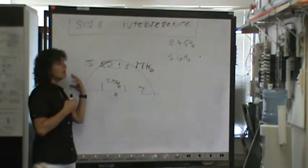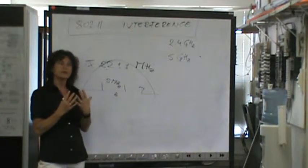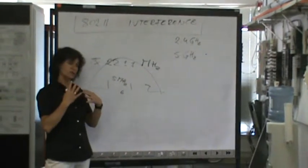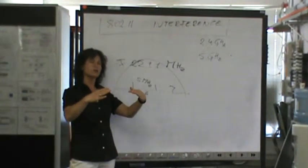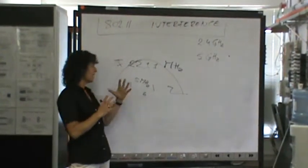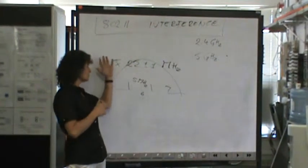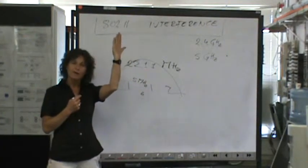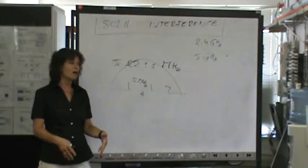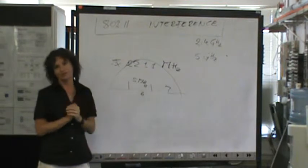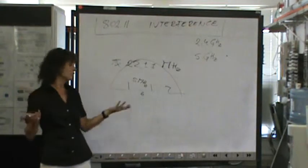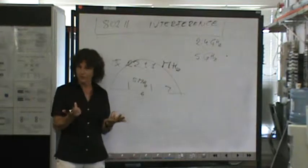So this adjacent channel interference is really bad and that doesn't mean that necessarily you configure something wrong. You could configure just fine with those non-overlapping channels 1, 6, and 11. But your neighbor above, your neighbor below, or just maybe the neighbor across the street configured with a channel number that interferes with you.